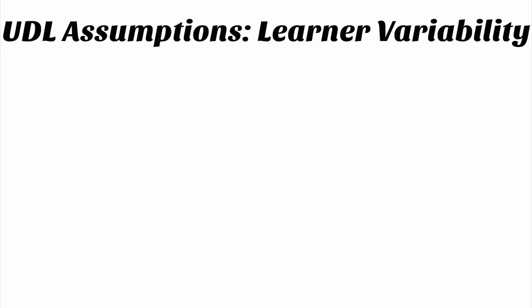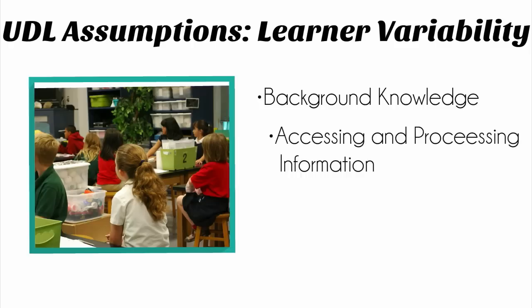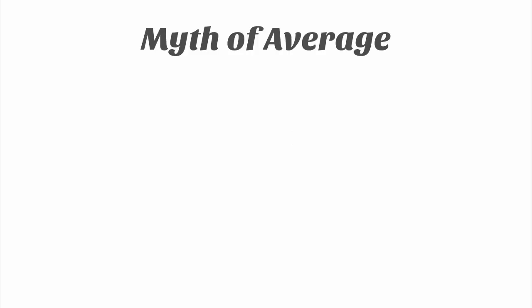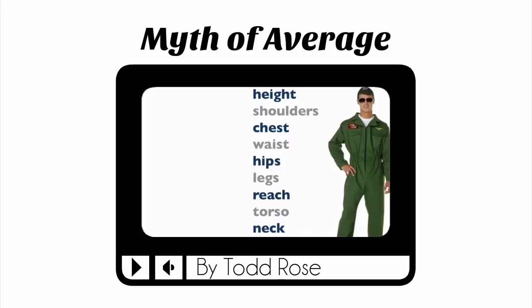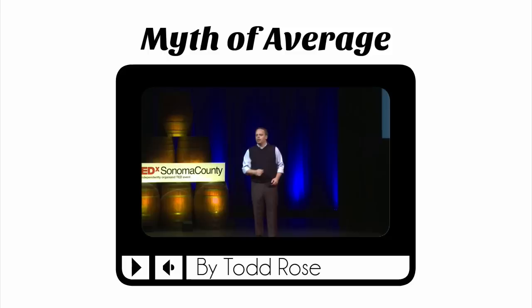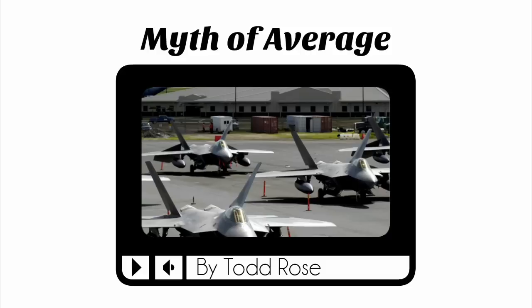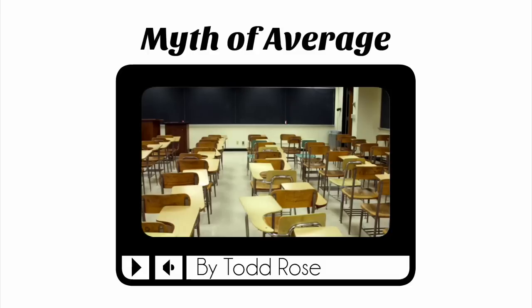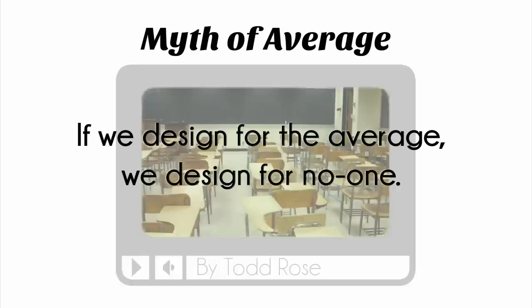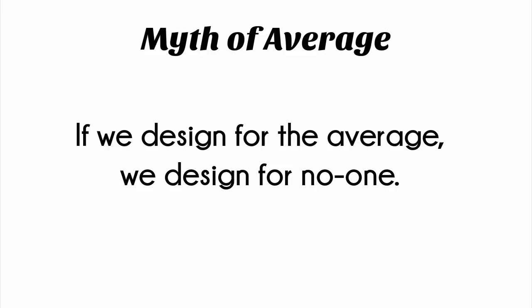Another assumption that UDL makes is that learners are varied. In any learning environment, you are always going to get a range of learners with different background knowledge, different ways of accessing and processing information, different temperaments, different school experiences. If you have a chance, watch the TEDx talk by Todd Rose called The Myth of Average. In the video, Todd uses the analogy of designing cockpits for fighter pilots to highlight how designing a physical space using this mythical average actually hinders the pilots from effectively doing their jobs. He then connects that to how we design instruction and says, if we design our instruction for the average learner, we are actually designing for no one.